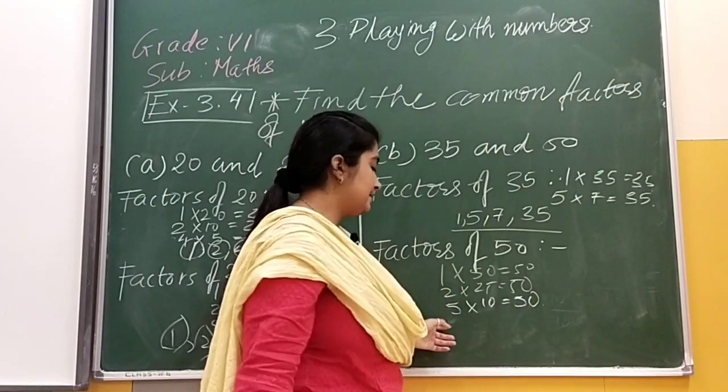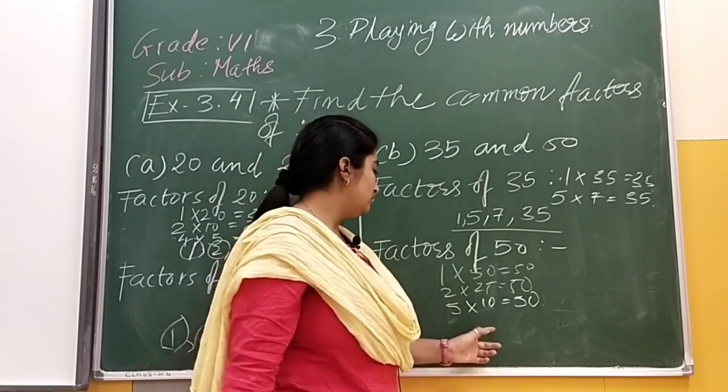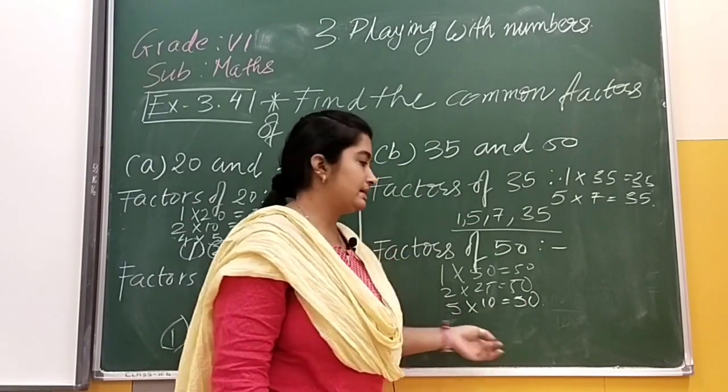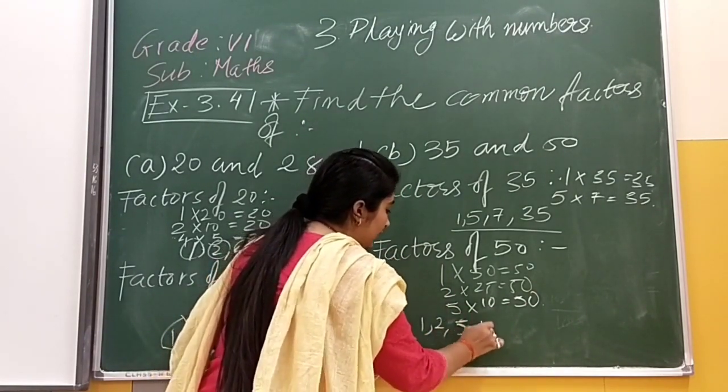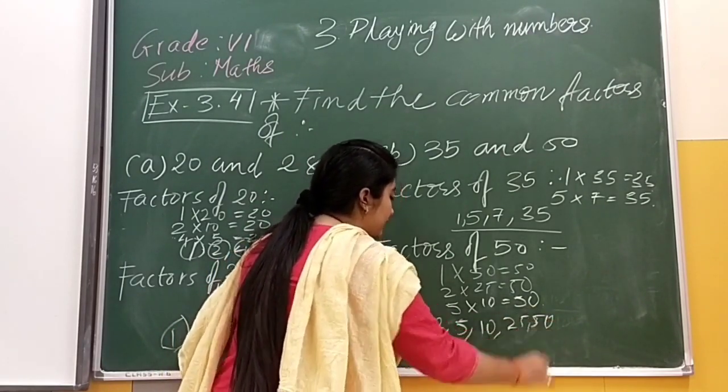Then, 6, 7, 8, 9 we can not be able to find. 10 again we have taken. The factors of 50 will be 1, 2, 5, 10, 25 and that will be 50.